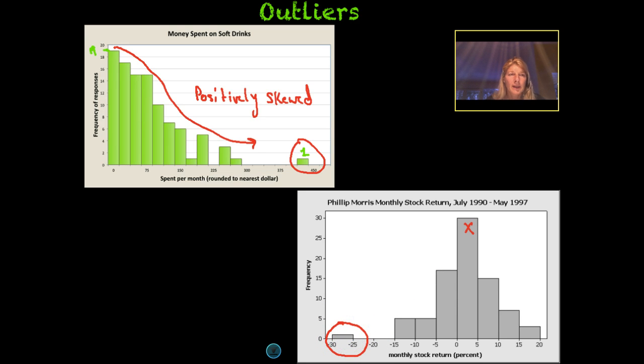All right. So let's move on past outliers. So we have SOCS. We've gone from shape to outliers. And now we're going to go to center.